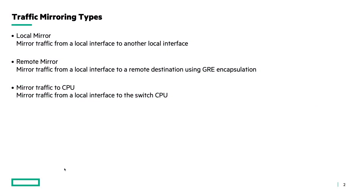We have three different traffic mirroring types on the CX switches. The first one is the local mirror, which allows you to mirror traffic from a local interface to another local interface. The second one is the remote mirror, which mirrors traffic from a local interface to a remote destination, and that traffic will be encapsulated using GRE. The last one is to mirror traffic to the switch CPU.